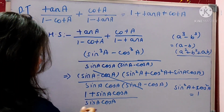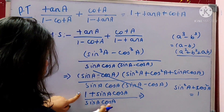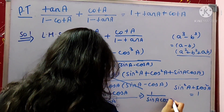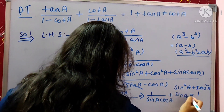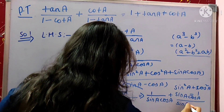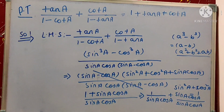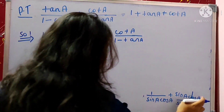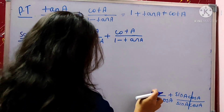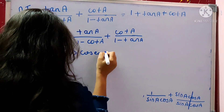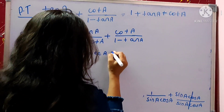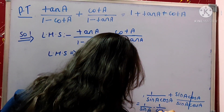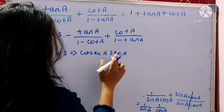Now we split this expression: 1 divided by (sin A cos A) plus (sin A cos A) divided by (sin A cos A). After splitting, we write 1 divided by sin A cos A plus 1. The sin A cos A in the second term cancels, giving 1. Splitting 1 divided by (sin A cos A) further gives 1 divided by sin A — which is cosec A — and 1 divided by cos A — which is sec A. So the final LHS is cosec A plus sec A plus 1.